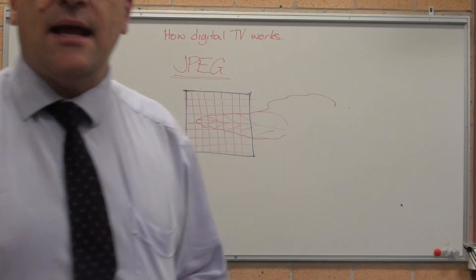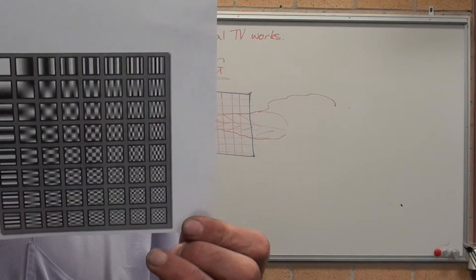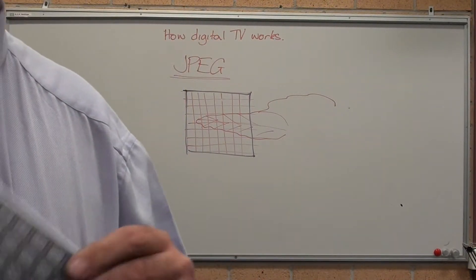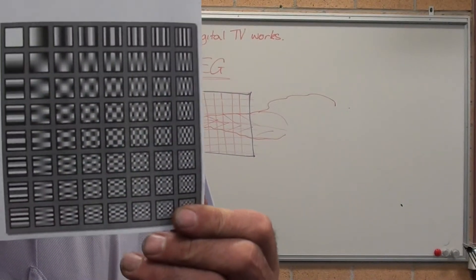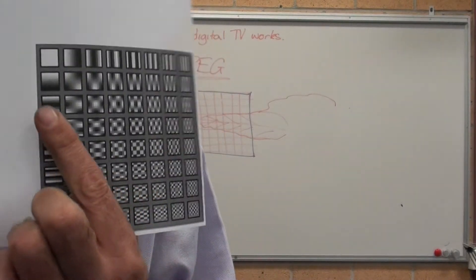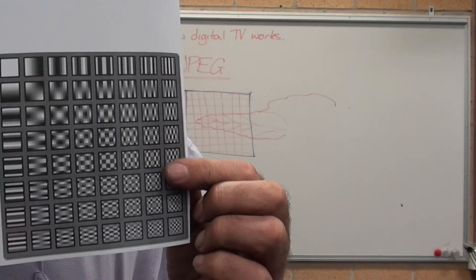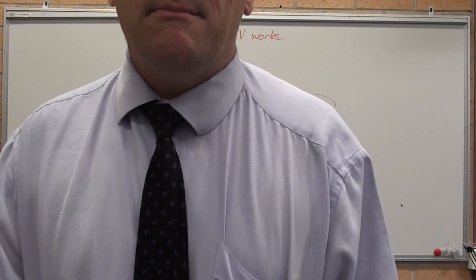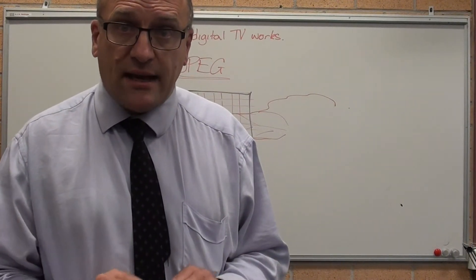It then looks at that 8 by 8 block of pixels and compares it against a standard frame, saying which part of that 8 by 8 pixel series has the most impact. JPEG also works by throwing away most of the colour information. The eye only sees mainly black and white images — colour is an added afterthought.